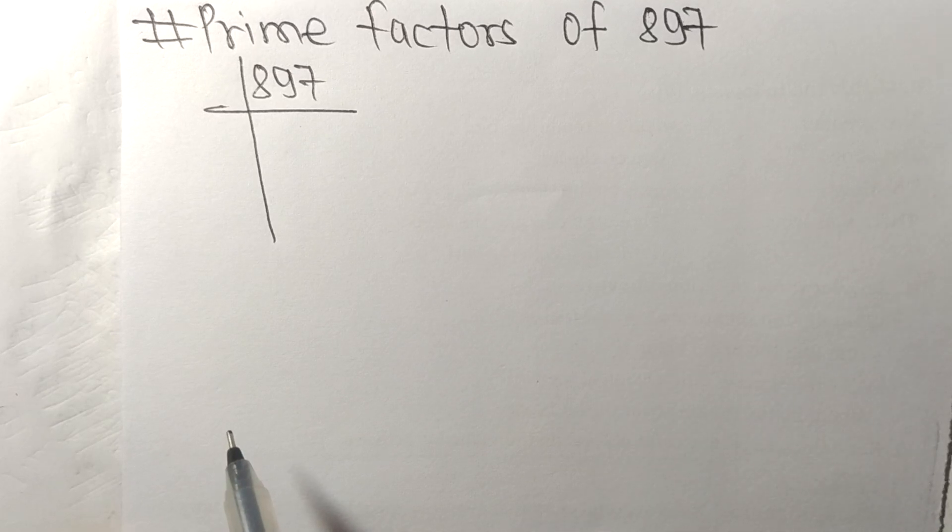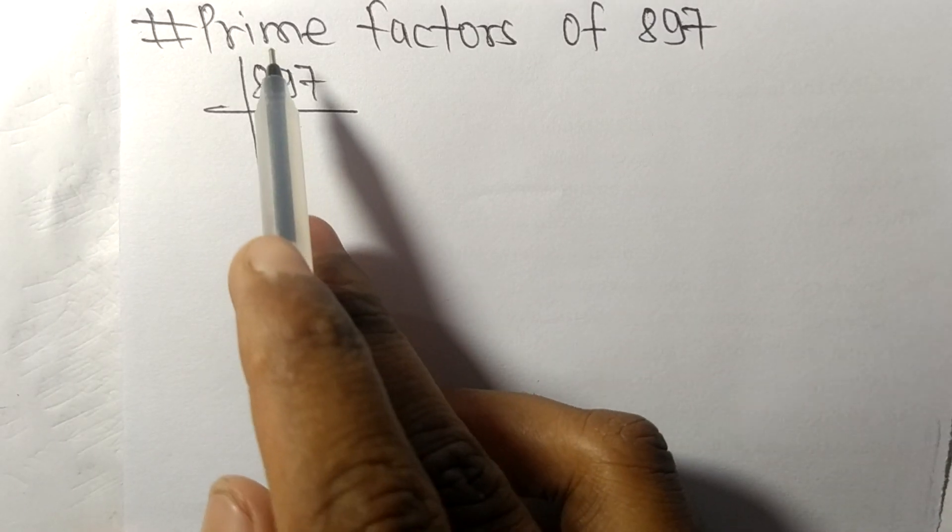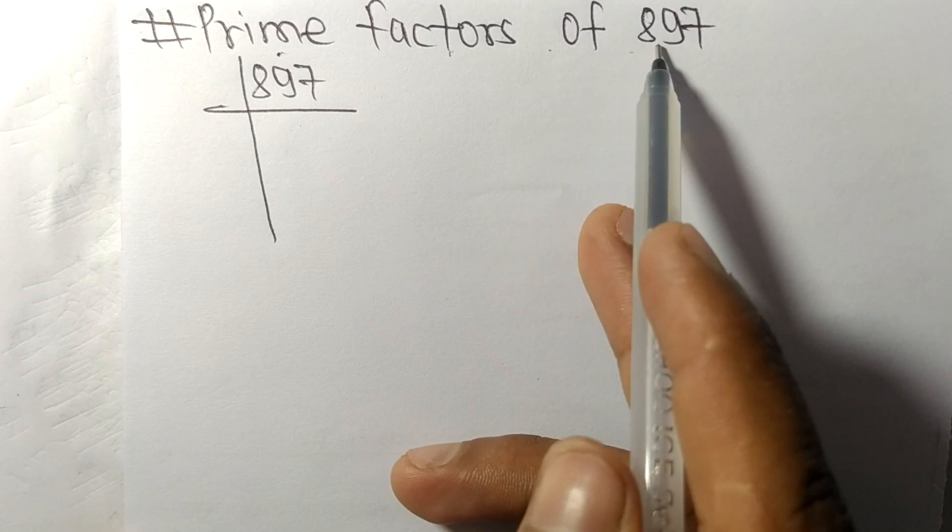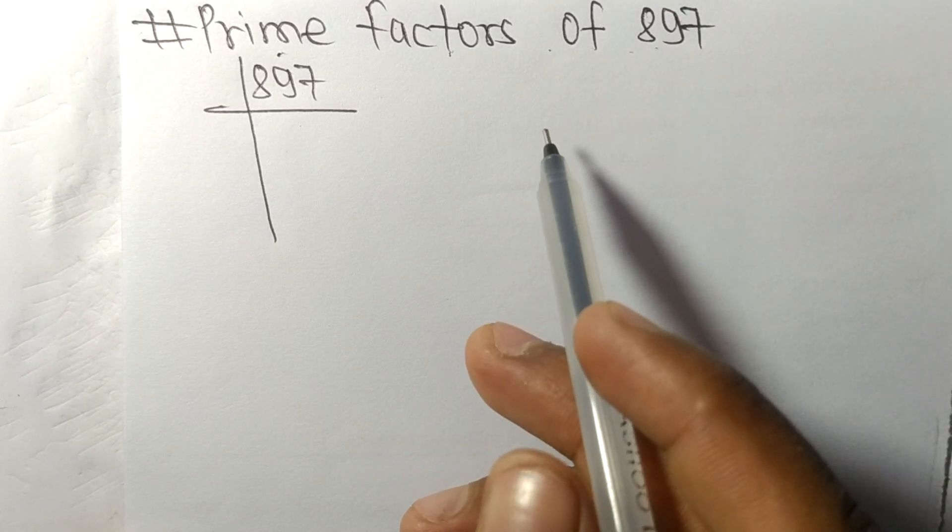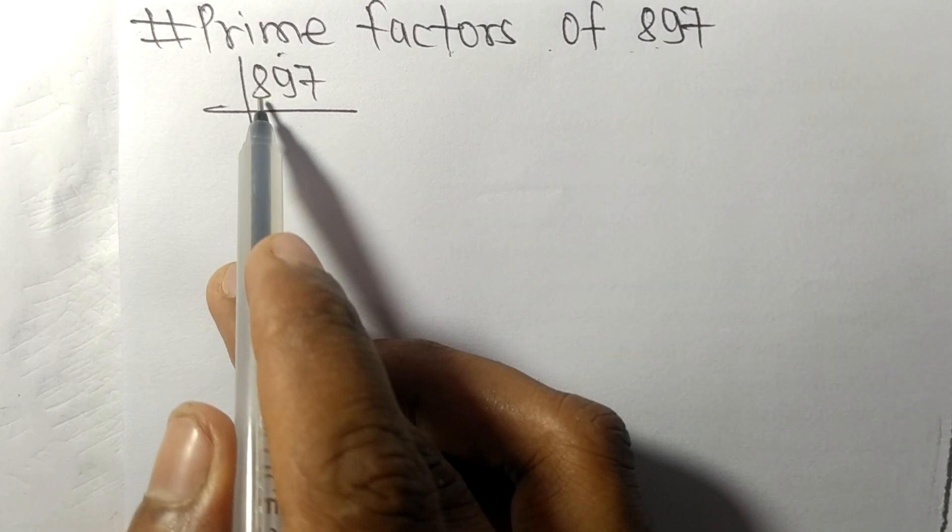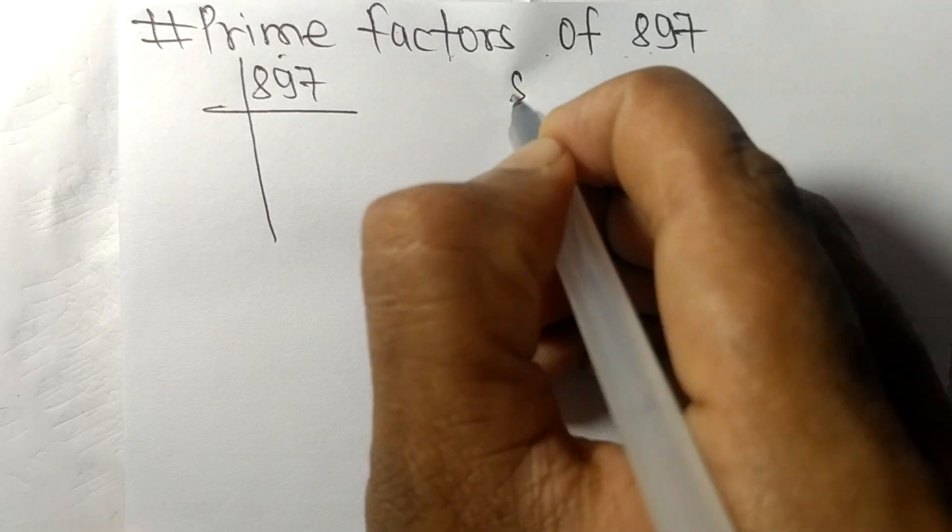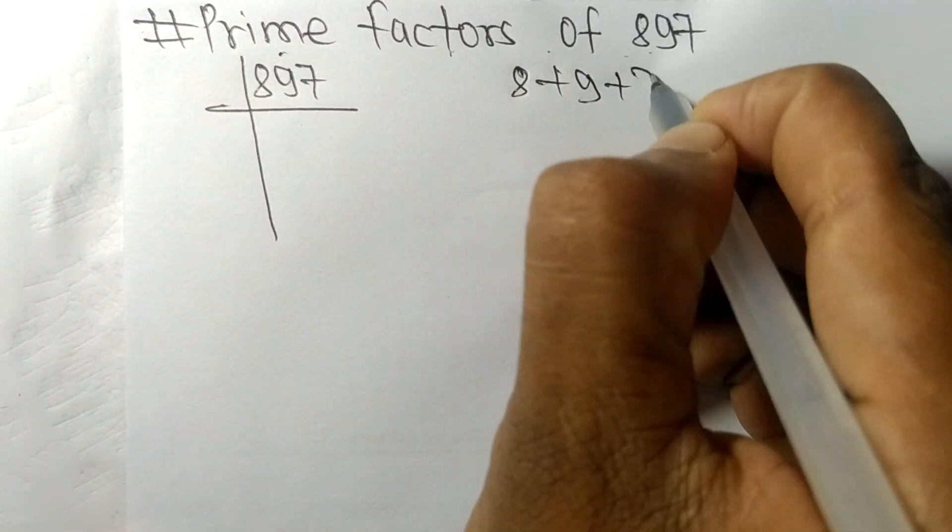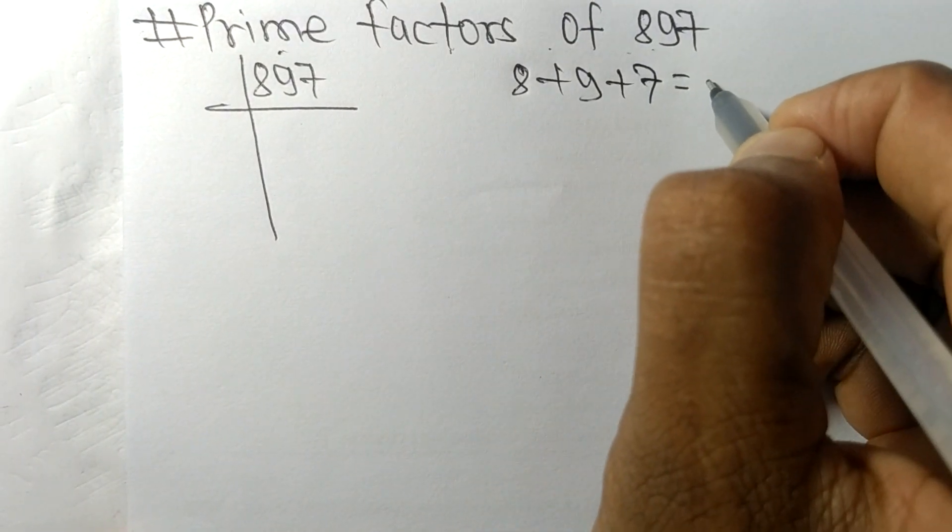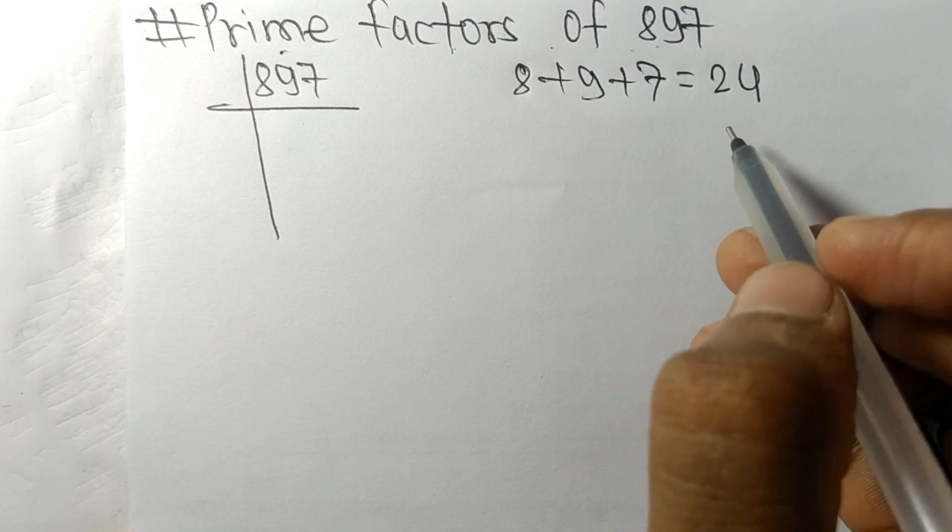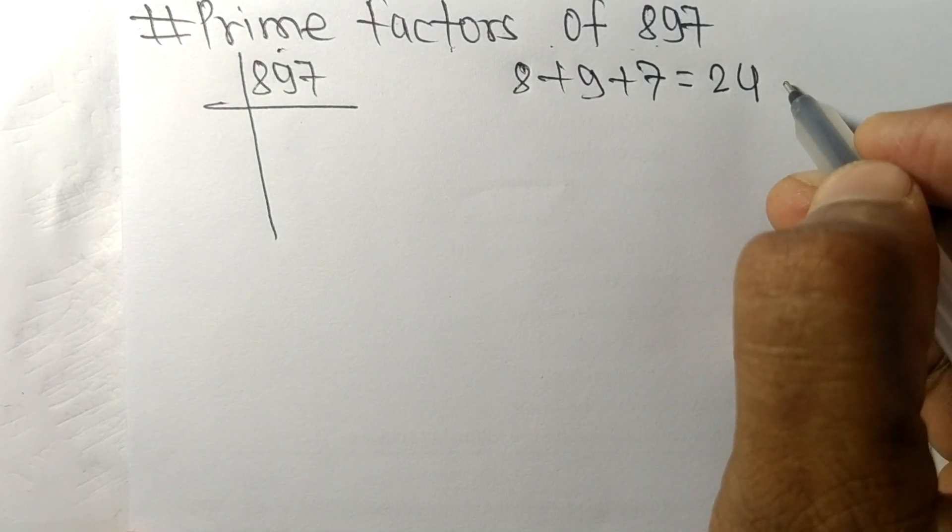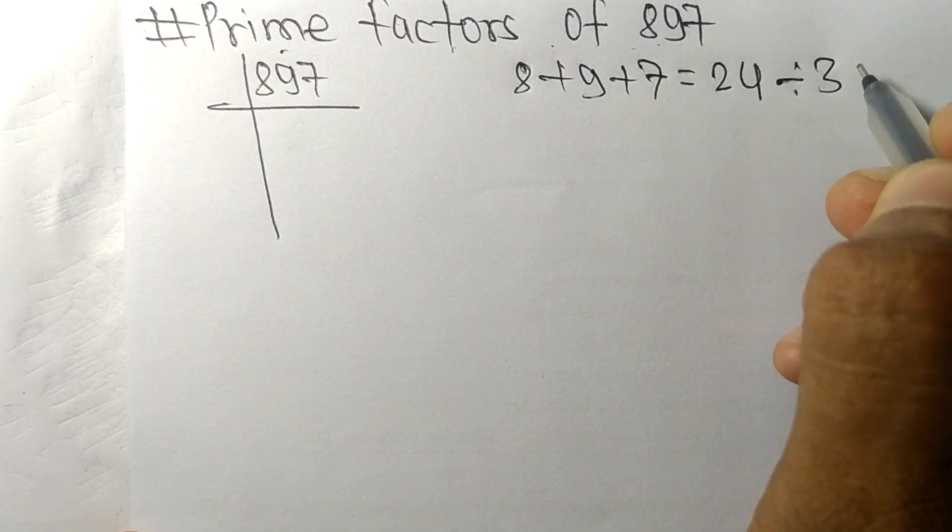Today in this video we shall learn to find the prime factors of 897. When we add all these numbers, that is 8 plus 9 plus 7, we get 24, and 24 is exactly divisible by 3.